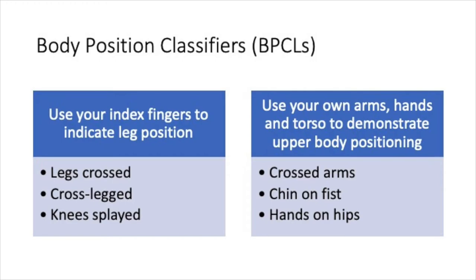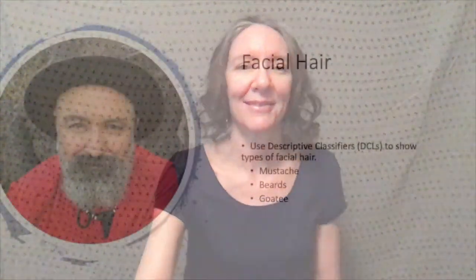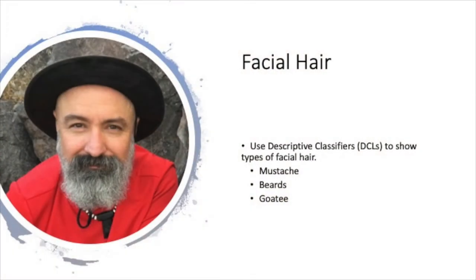For example, is their chin resting on their fist, their arms crossed, or maybe they're waving to someone. We use descriptive classifiers, or DCLs, to indicate facial hair. For example, a mustache — even the type of mustache. A beard, the extent or thickness of a beard. Or a goatee, a mustache and beard that connect.